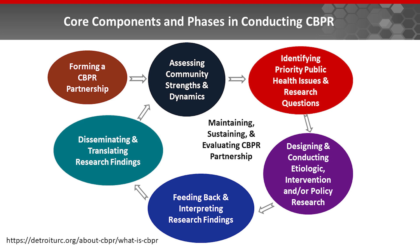The third component is identifying priority local health concerns and research questions. The key question here is: how do we figure out what are the major health problems that impact the community and that the partnership might address? The fourth component involves designing, conducting, and disseminating the intervention or policy or etiological research, and deciding which research design and data collection methods to use and what is the most appropriate intervention strategy.